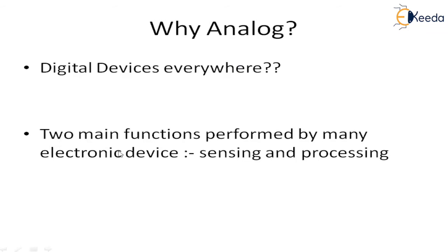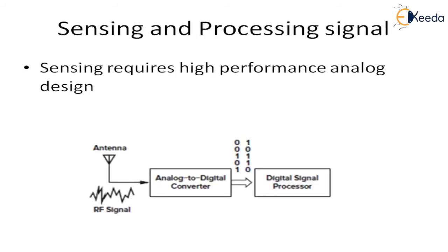As we all know, we are surrounded by many electronic devices and the main functions performed by these devices are sensing and processing. As the RF signal is received by an antenna, the main process is sensing. First, we sense the received signal. It is converted into a digital signal by an analog-to-digital converter, and further this digital signal is processed in a digital signal processor. So this sensing requires high-performance analog design — it is the major requirement of any electronic device.